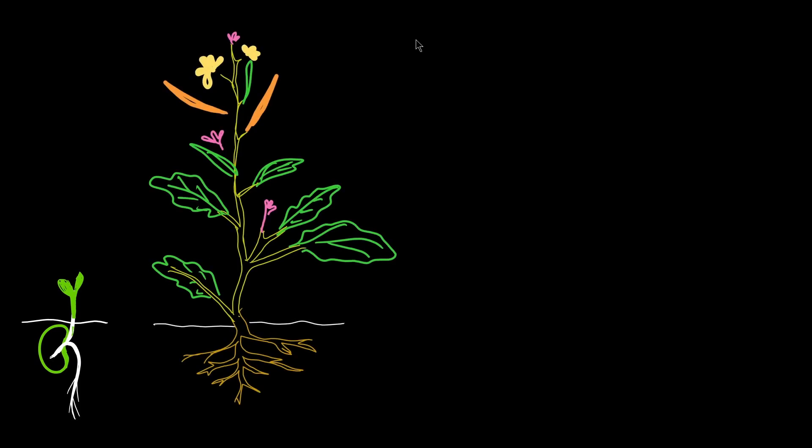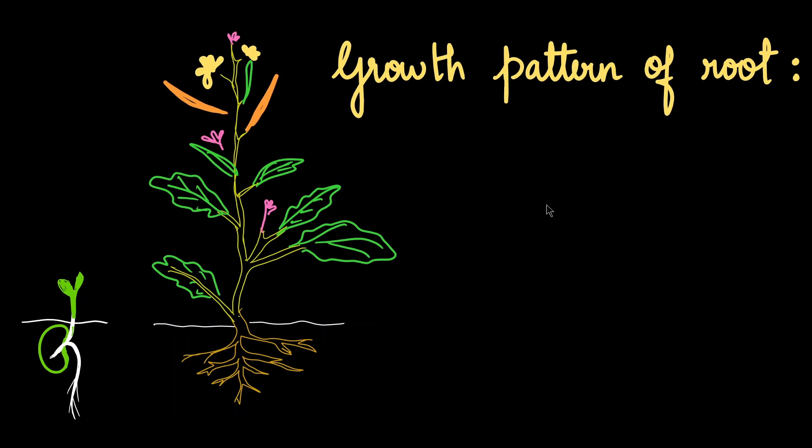Irrespective of whether we take a seedling or a fully grown plant, we have seen that the roots have certain growth patterns. This growth pattern is based upon two main features. First is the genetics of the plant. The way an organism grows depends on its genetics, which carries all the information regarding the organism. What the branches should look like, what the flowers are like, what the root is like, all these are decided by the genetics of the plant.